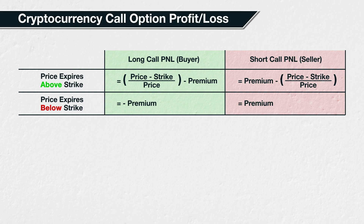This table shows how to calculate the profit or loss of a Bitcoin call option position for either the buyer or seller. To keep things simple, we've left out the position size, i.e. the number of contracts. To adjust for that, you would simply multiply by the number of contracts afterwards.